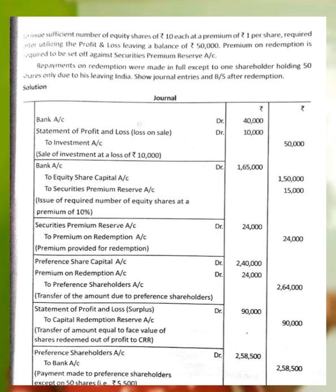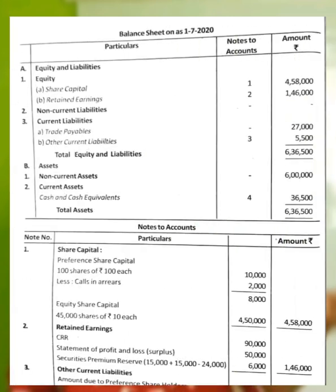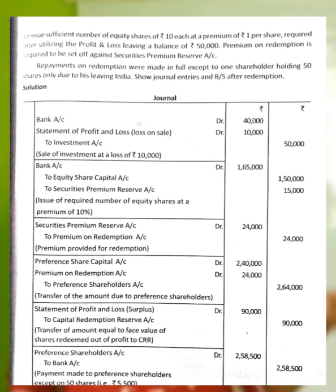Payment made to preference shareholders: Rs.2,58,500 (i.e., Rs.2,64,000 minus Rs.5,500 for 50 untraceable shares). The 50 untraceable shares = 50 × Rs.110 = Rs.5,500 not paid. That Rs.5,500 remains as a current liability — untraceable preference shareholder amount.